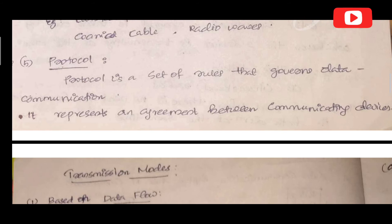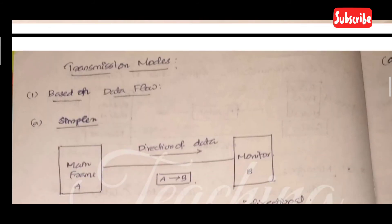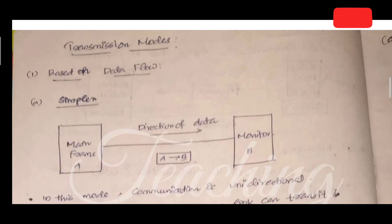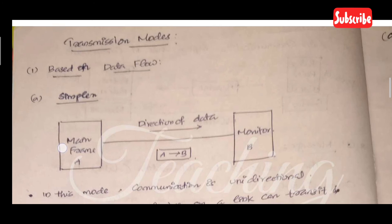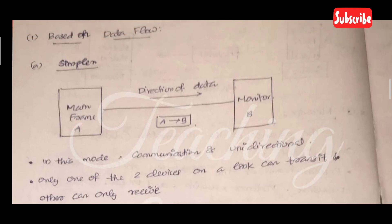The next part is transmission modes. Based on the flow of data, transmission modes are divided into three types: simplex, half duplex, and full duplex.